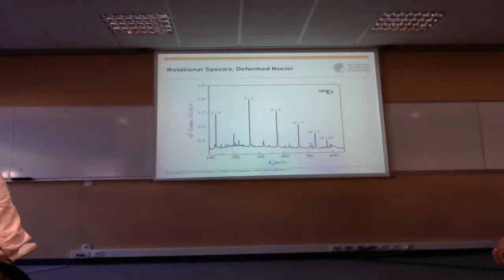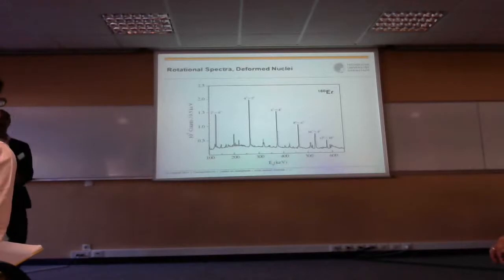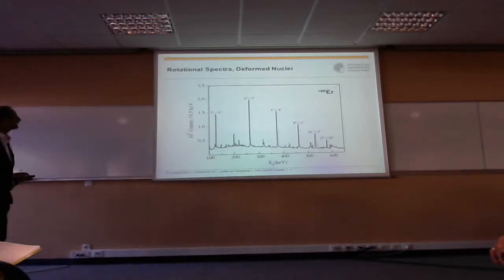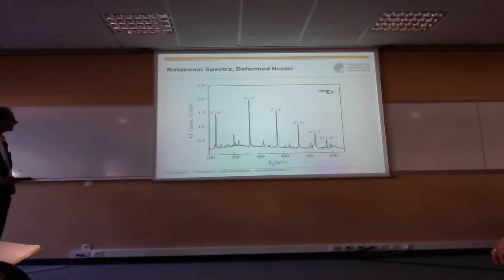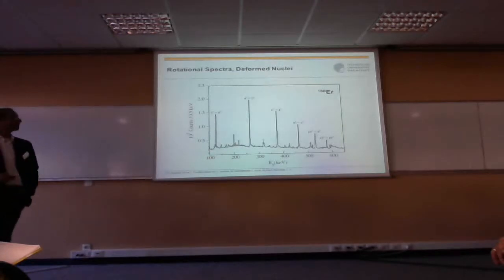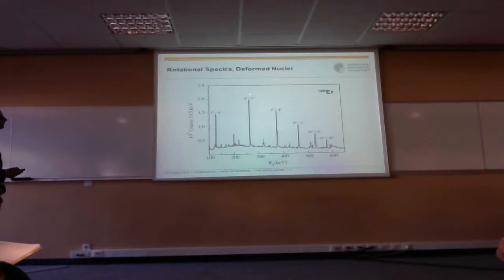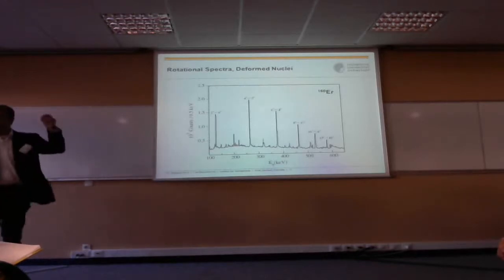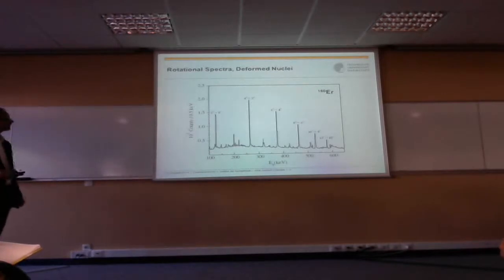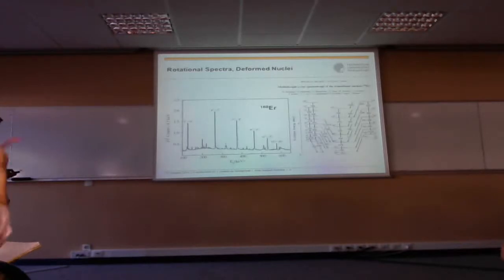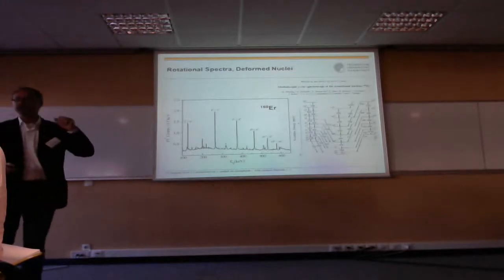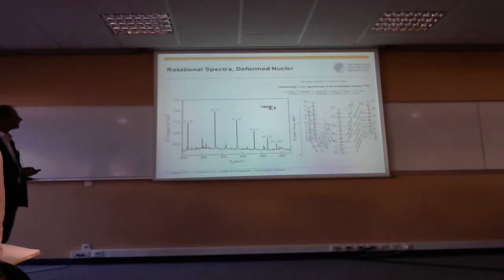When you do nuclear structure studies, you do spectroscopy on nuclei with high resolution — gamma ray spectroscopy with germanium detectors, for example. You then see in a nuclear reaction these gamma ray spectra where you can recognize several gamma ray transitions. Some are very prominent and you see regular features. Here I have labeled a few gamma rays in Erbium-160, which is a deformed even-even nucleus. You have gamma ray transitions from 2+ to the ground state 0+, then 4 to 2, 6 to 4, 8 to 6, 10 to 8. These belong to the same structure.